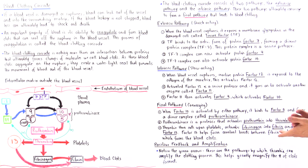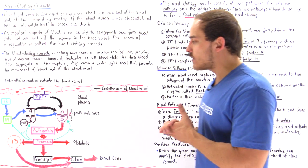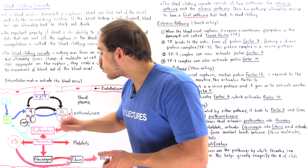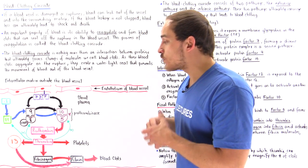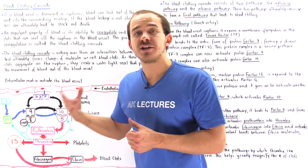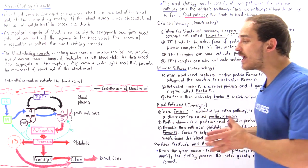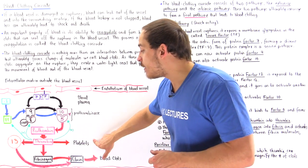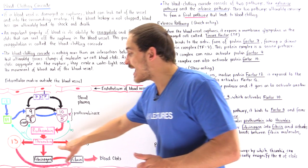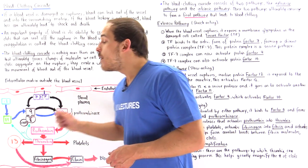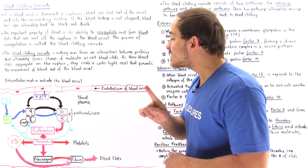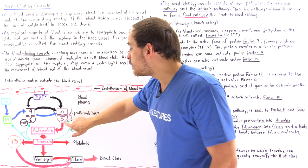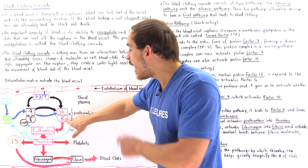Finally, the green arrows in the illustration represent amplification mechanisms — positive feedback. Thrombin not only activates platelets, fibrin, and factor 13, but also via a positive feedback mechanism activates more factor five, causing more prothrombinase complexes to form and further amplifying the clotting process.